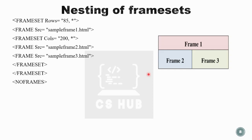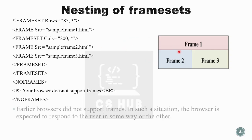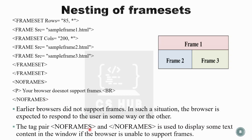In some browsers that do not support framesets — similar to the noembed tag used for media — we can use the noframes tag. Inside the noframes tag, specify text to display when the browser does not support frames, for example: 'Your browser does not support frames.' The noframes tag pair is used to display text content in the window if the browser is unable to support frames.